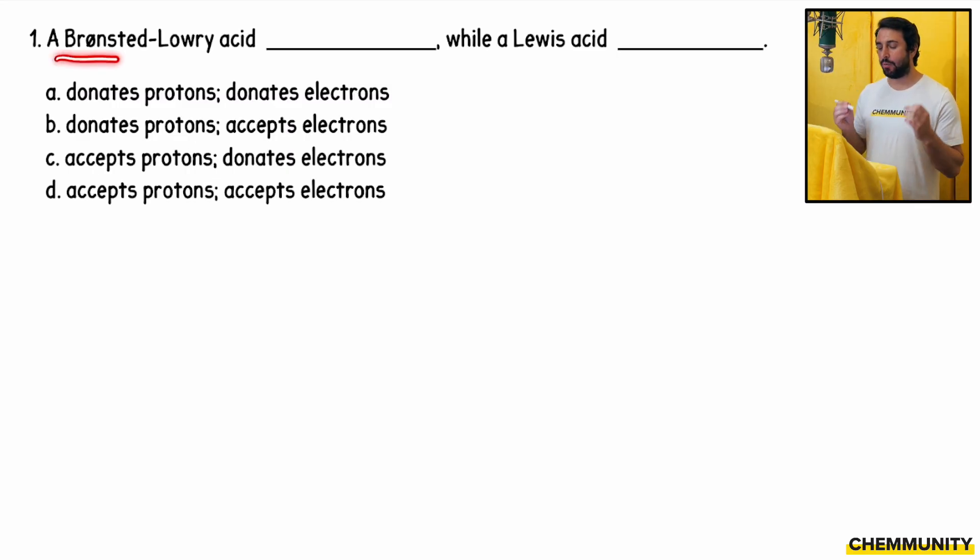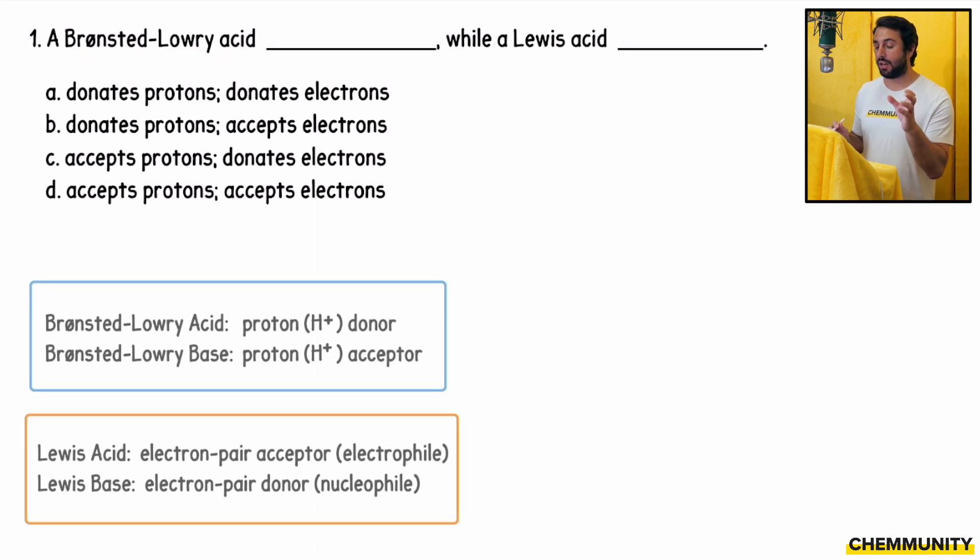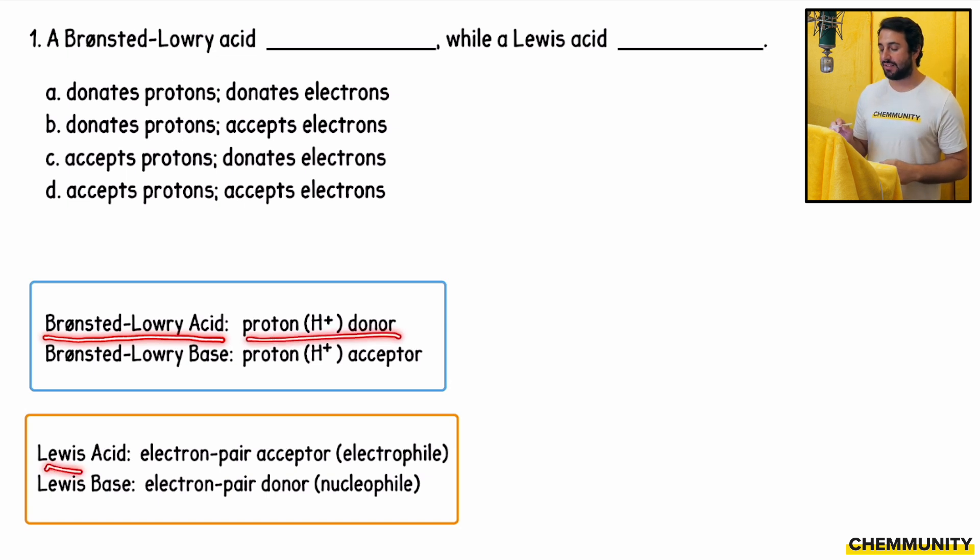Number one asks: a Bronsted-Lowry acid blank, while a Lewis acid blank. We have these two different paradigms, the Bronsted-Lowry definition and the Lewis definition. For Bronsted-Lowry, we're talking about transferring protons, while with Lewis we're talking about electrons. A Bronsted-Lowry acid donates protons, and a Lewis acid accepts electrons. So this one is going to be option B.